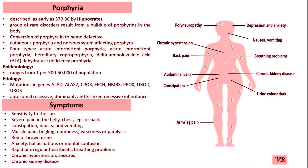The diagnosis of porphyria involves several steps including clinical evaluation, laboratory tests, and sometimes genetic testing. A common diagnostic test is the analysis of urine for porphobilinogen (PBG) and other porphyrin precursors. Elevated levels of porphobilinogen are indicative of acute porphyria such as acute intermittent porphyria.